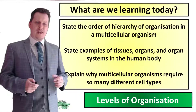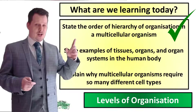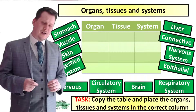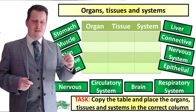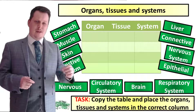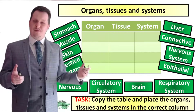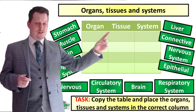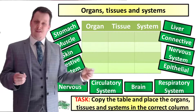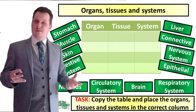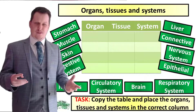Now that we've stated the hierarchy we can check that off our list. What I'd like you to do is copy this table. It's got three headings: organ for organs, tissue for tissues, and system for organ systems.